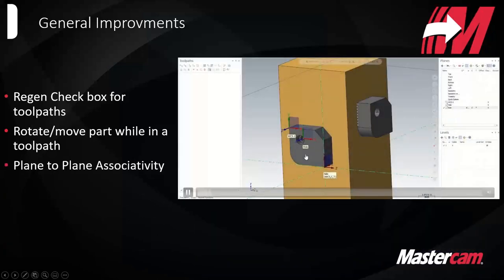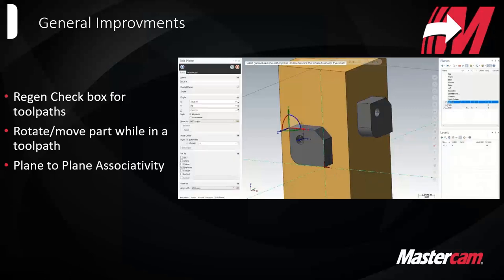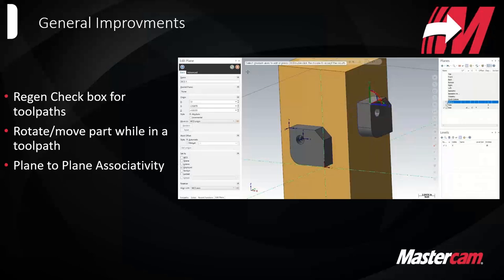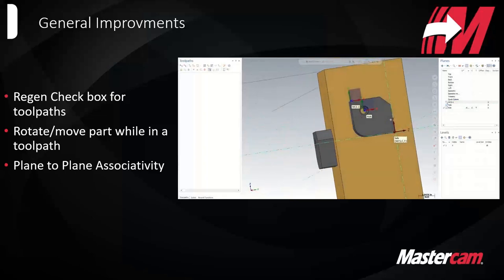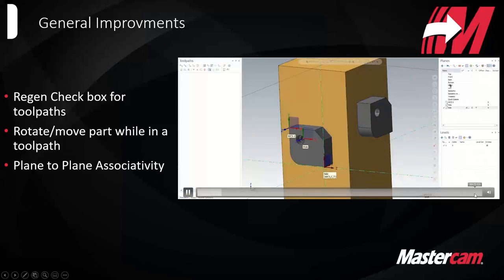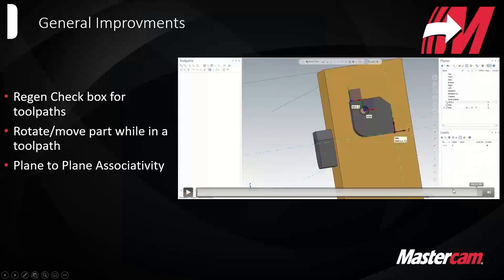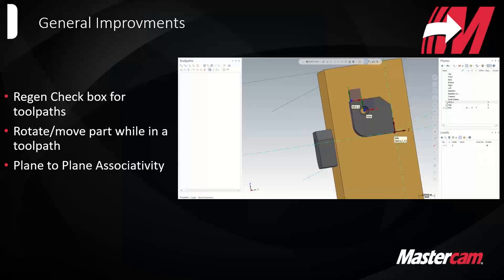There's now plane-to-plane associativity. In this example, we have a plane based off of a hole on the face of a tombstone part, and another plane representing the zero point. Those two planes are linked, so if I copy or move an existing plane to a different face or location, since it's associated to that other plane it'll move along with it. This can save a lot of time when creating operations for horizontal machines and multi-axis.